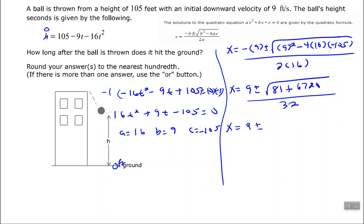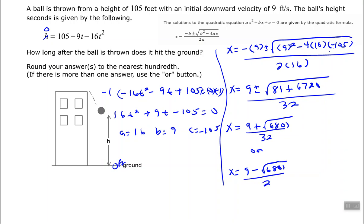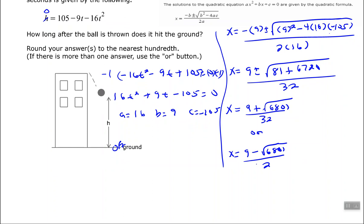Separating into the two cases: t equals 9 plus the square root of 6,801 all over 32, or t equals 9 minus the square root of 6,801 all over 32. Place each into your calculator.